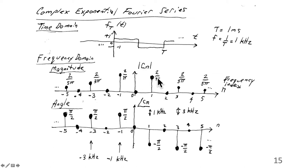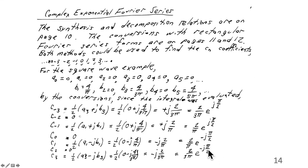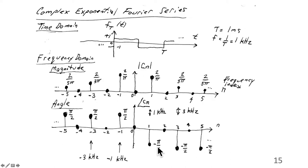The magnitudes are 2 over pi, 2 over 3 pi, 2 over 5 pi, and so on — on both sides. The phases: for n equals 1, 3, and 5, the phase is minus pi over 2. This comes from e to the minus j pi over 2. Similarly, for c minus 1, minus 3, minus 5, the phase is plus pi over 2. The even coefficients for this particular periodic signal happen to be 0.